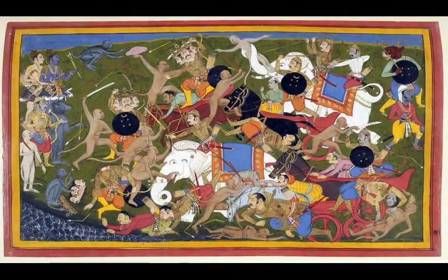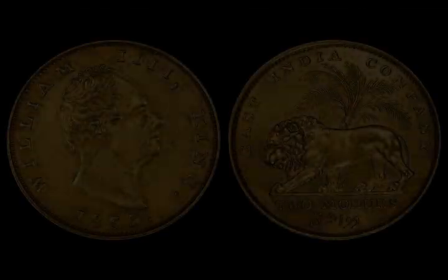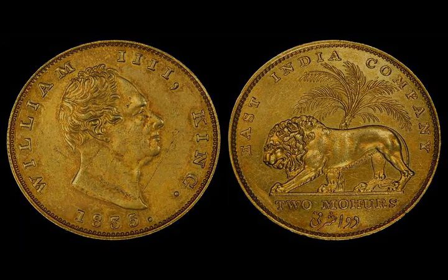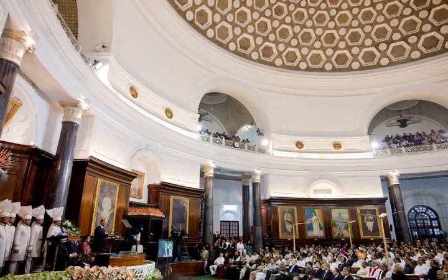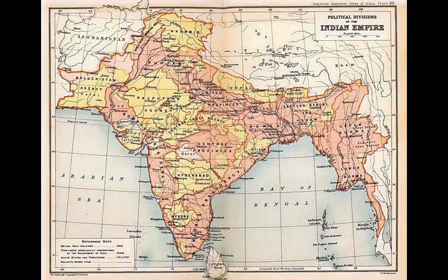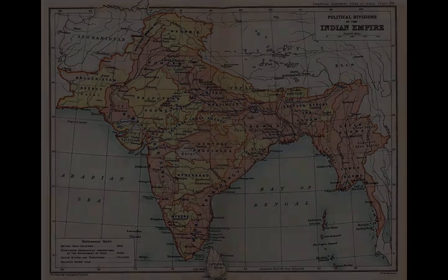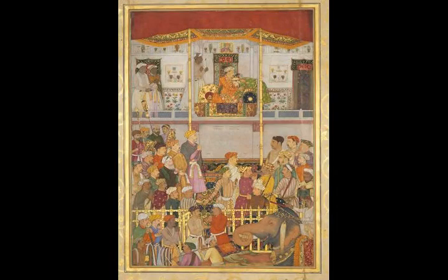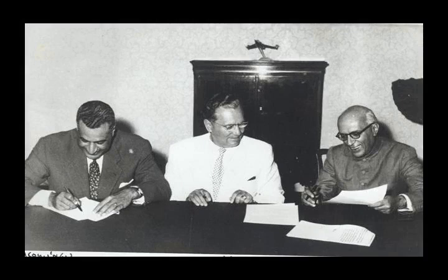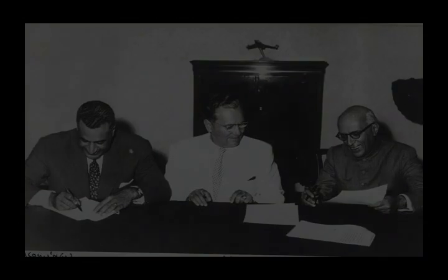During the 1930s, slow legislative reform was enacted by the British, and the Indian National Congress won victories in the resulting elections. The next decade was beset with crises: Indian participation in World War II, the Congress's final push for non-cooperation, and an upsurge of Muslim nationalism. All were capped by the advent of independence in 1947, but tempered by the partition of India into two states, India and Pakistan. Vital to India's self-image as an independent nation was its constitution, completed in 1950, which put in place a secular and democratic republic. Economic liberalization, which began in the 1990s, has created a large urban middle class, transformed India into one of the world's fastest-growing economies, and increased its geopolitical clout.